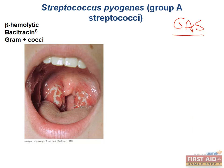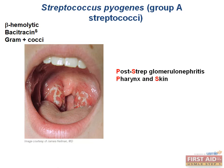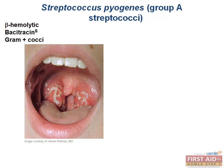Pharyngitis from strep pyogenes has three important complications: abscesses (retropharyngeal or peritonsillar), glomerulonephritis, and rheumatic fever. Glomerulonephritis can occur after both pharyngitis or skin infections, whereas rheumatic fever will only occur after pharyngitis. We treat pharyngitis with penicillin specifically to prevent these complications — it must be given early before the antibodies that mediate rheumatic fever and glomerulonephritis are produced. Early detection and treatment is crucial.